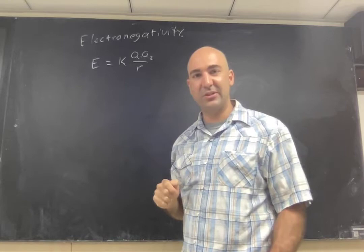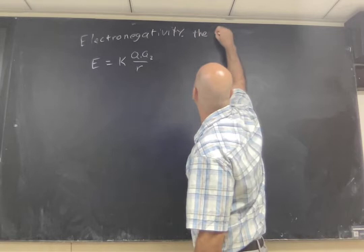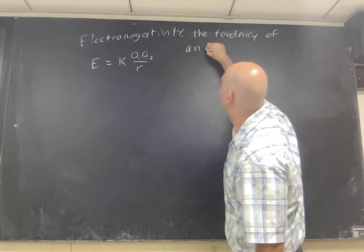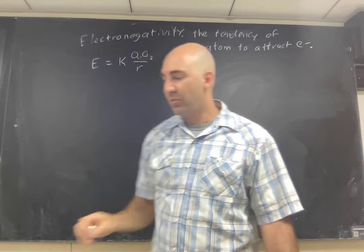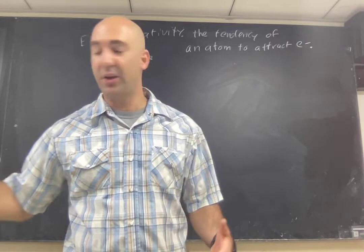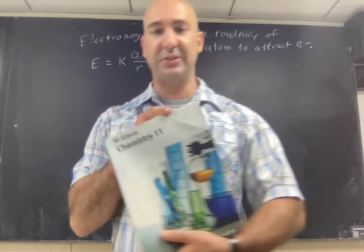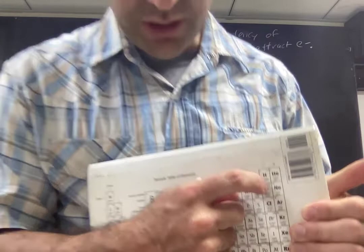Electronegativity is, and this is where the definition is actually kind of goofy. It's one of those things that everybody's got to memorize. But it's actually the tendency of an atom to attract electrons. And when you learn electronegativity, most of you will have a table. Whatever book you're using, this is the British BC science textbook, it's all right for CHEM11. On the back, they've got electronegativity values written down.